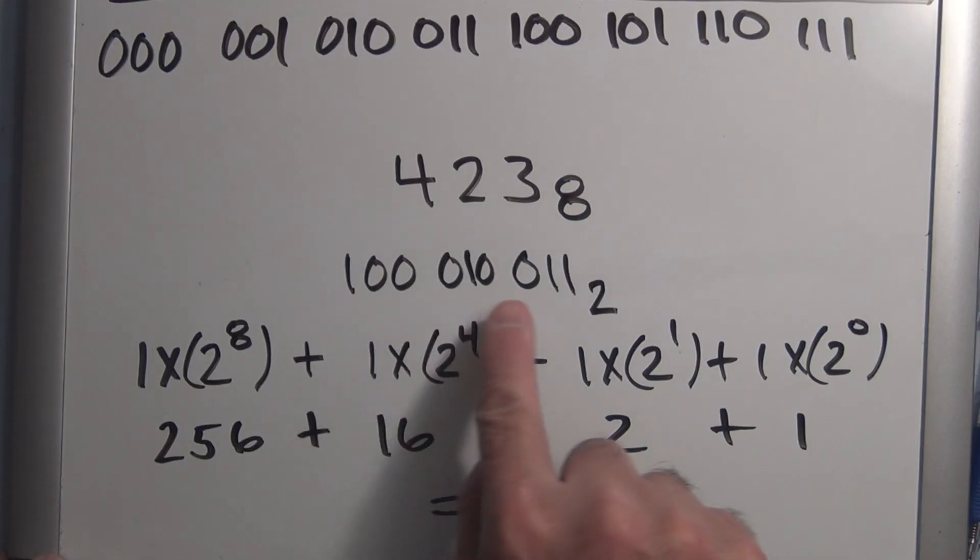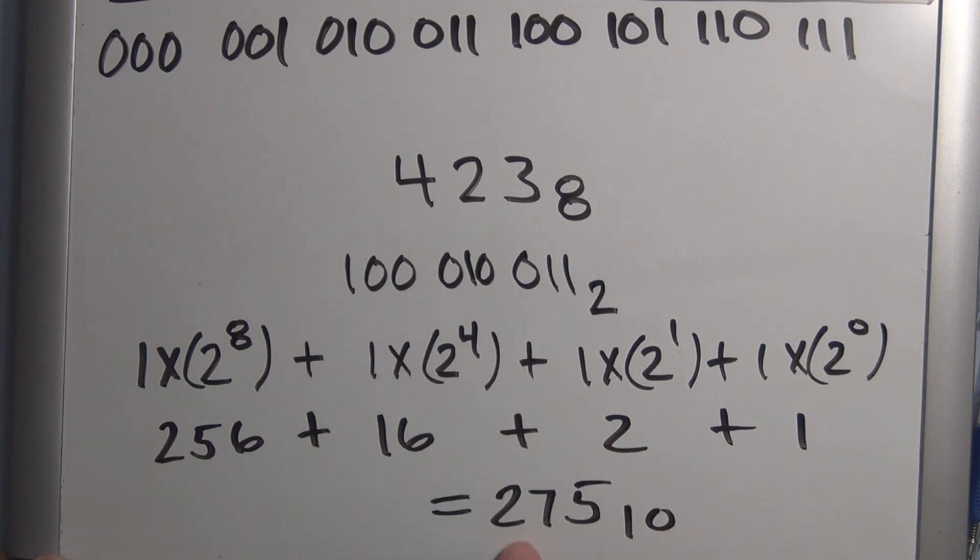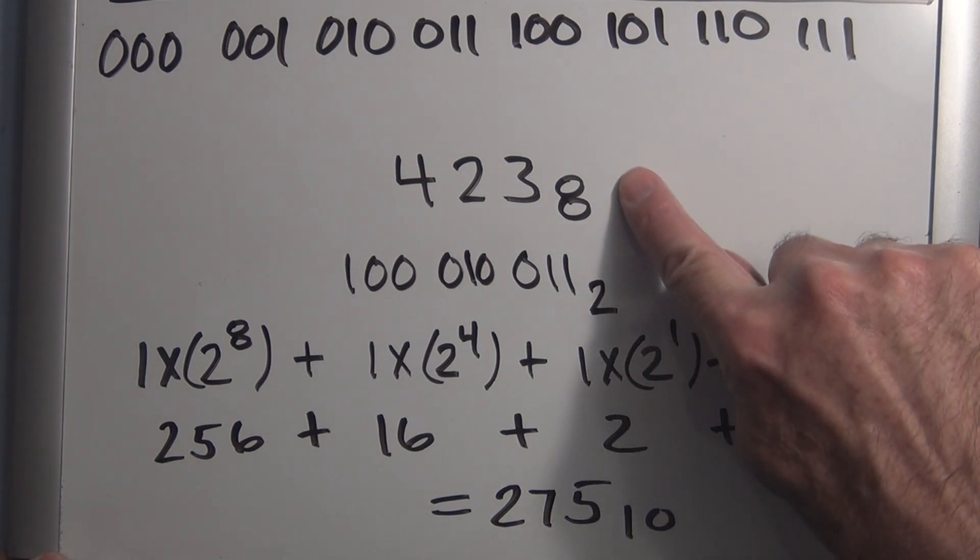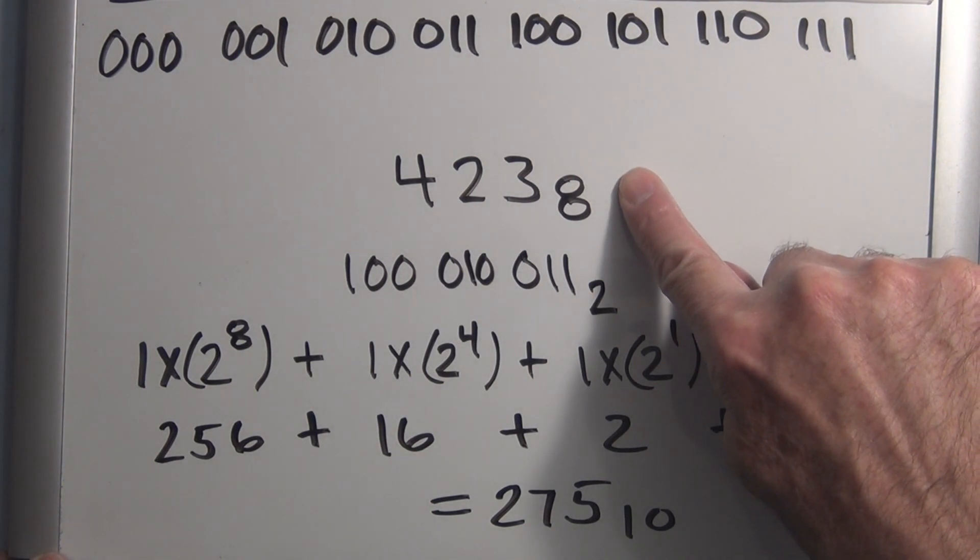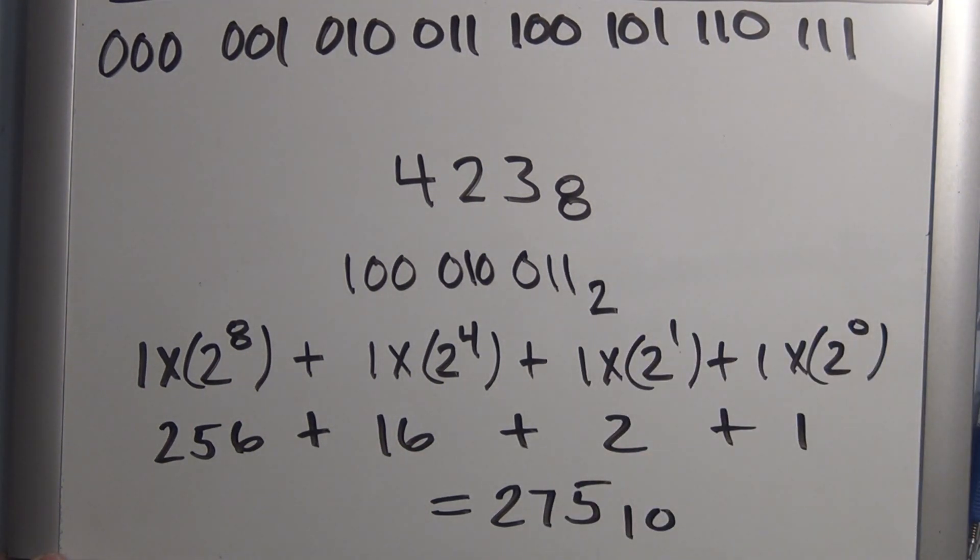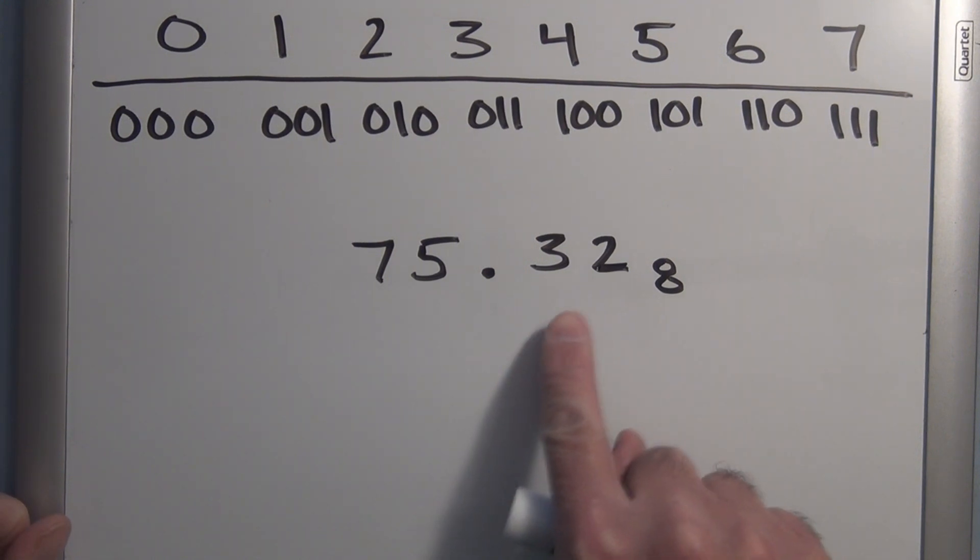And you can see here, if we take this binary number now and convert it back to decimal, we end up with 275 decimal, which we already determined was equivalent to 4, 2, 3 octal. So the same technique applies to an octal number with a fractional portion.